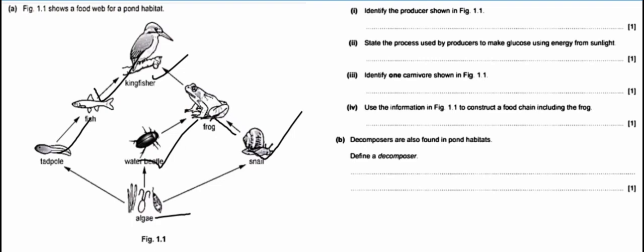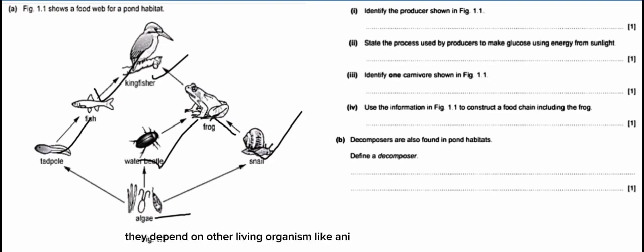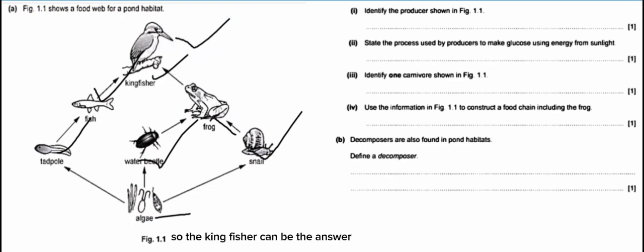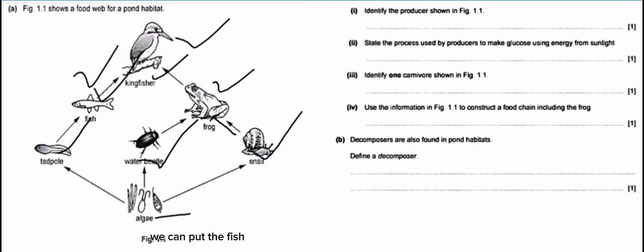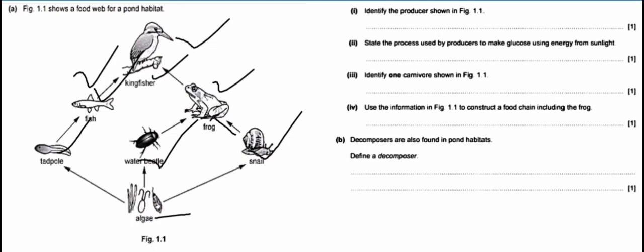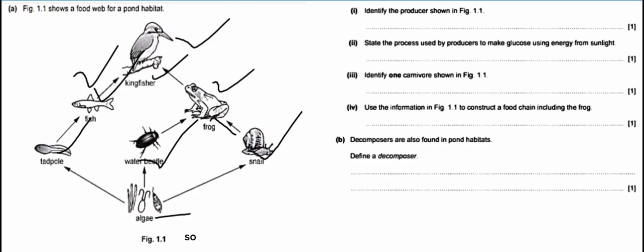Roman number three: identify one carnivore shown in figure 1.1. Carnivores depend on other animals only. An example of a carnivore you can give is the kingfisher, the flock, or the fish — any of those answers is correct. If you put tadpole, that is wrong — the tadpole is not a carnivore, it is a herbivore because it feeds on the algae. Similarly, the water beetle is not a carnivore — it is a herbivore, depending on the algae to survive.